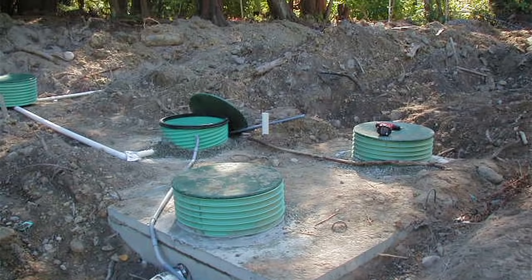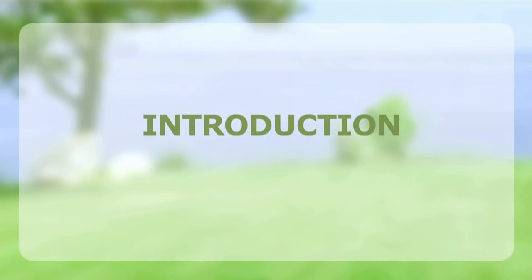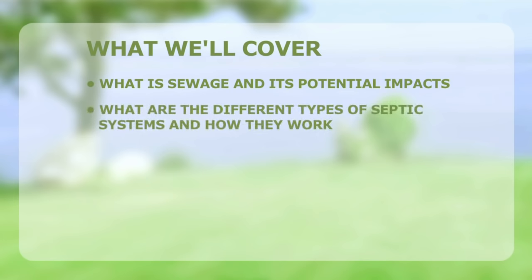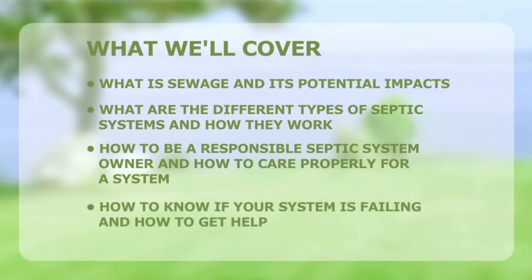In modern times, rules and regulations have been established on how to properly dispose of sewage. When not connected to a wastewater treatment facility or sewer, a home's best long-term option is a septic system. It's important to make sure your septic system works properly, but first you need to know how your system works. In this video, we'll look at sewage and its potential impacts on health and the environment, and we'll explore the different types of septic systems and how they work. We'll also talk about being a responsible septic system owner and how to care properly for a system, as well as how to detect a system failure and get help.